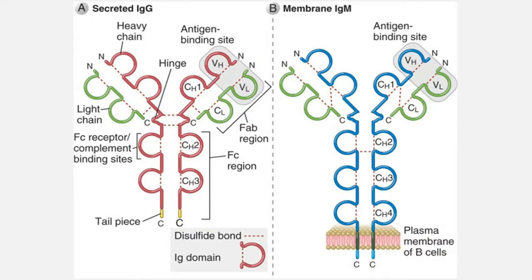Looking at two completely different antibodies side by side — one a secreted IgG, one a membrane-bound IgM — we can see the similarities: Ig domains bridged by disulfide bonds, hinges separating the two antigen-binding portions, variable portions with V subscripts, and both heavy and light chains. Every antibody has the ability to bind two antigens. Differences include the tail pieces between secreted and membrane versions, the length of the heavy chains, and the number of heavy constant regions — some antibodies have four regions, others have three.